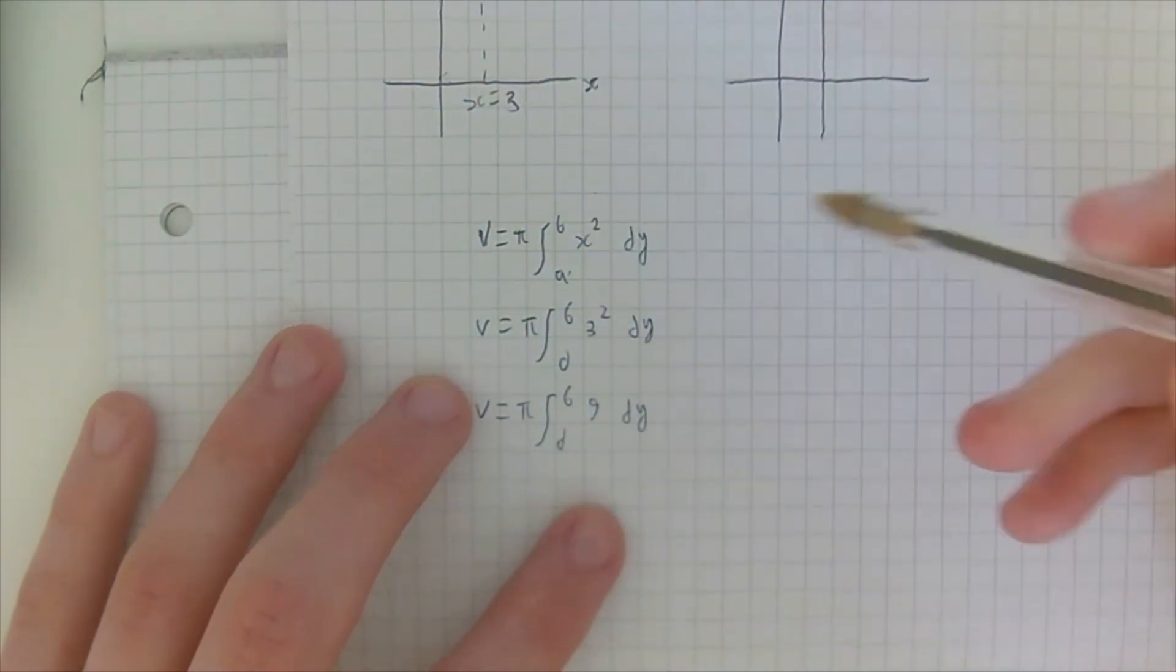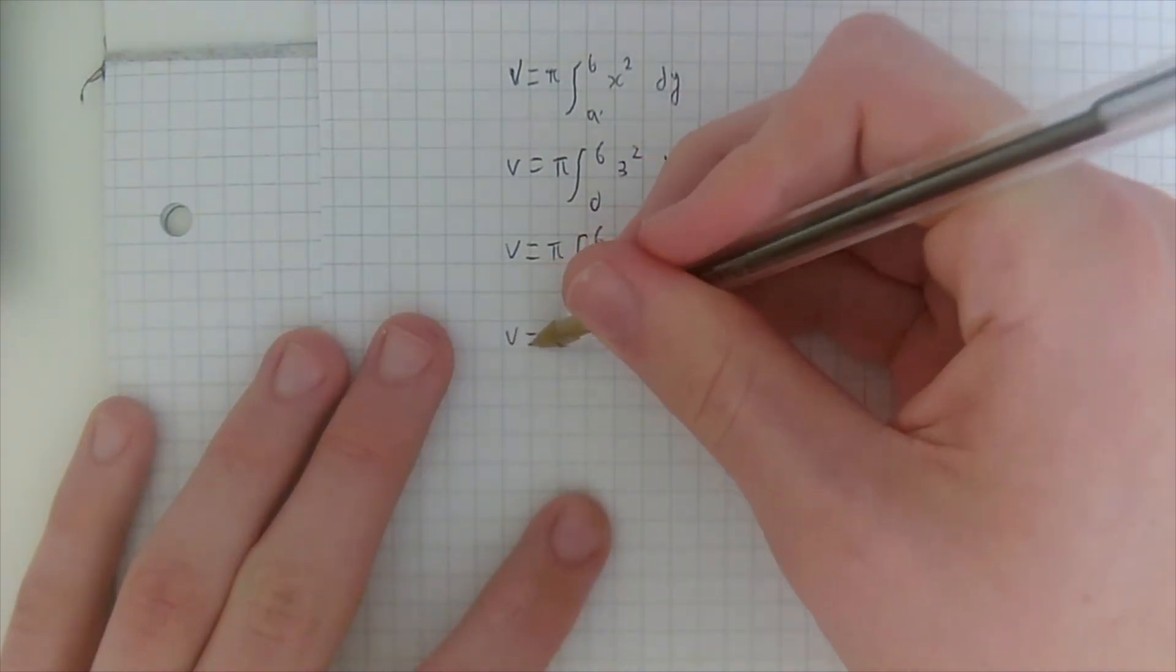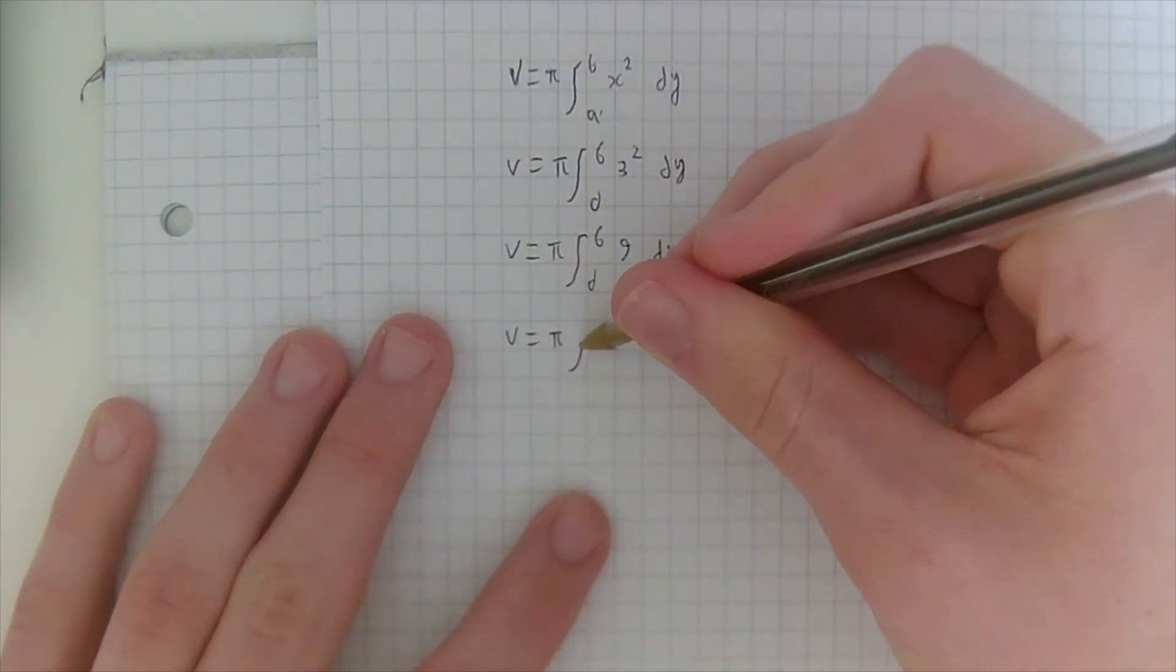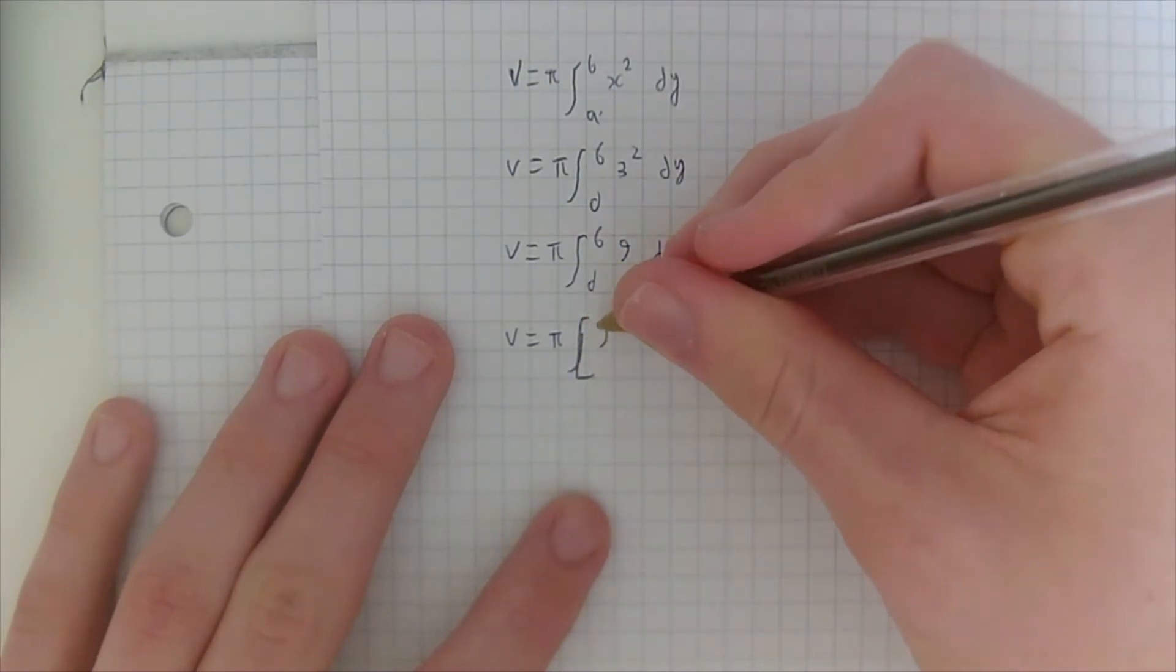Now if we just do the integral here, of course 9 dy is just 9y.